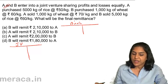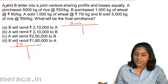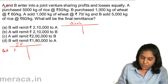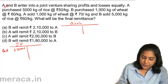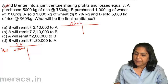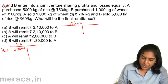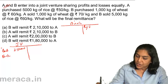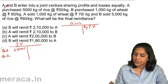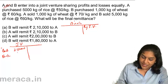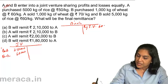A purchased 5,000 kg of rice at ₹50 per kg, so that's ₹2,50,000 — debit to bank, ₹2,50,000. B purchased 1,000 kg of wheat at ₹60 per kg — this goes to B's account. B's account is debited by joint venture for ₹60,000.